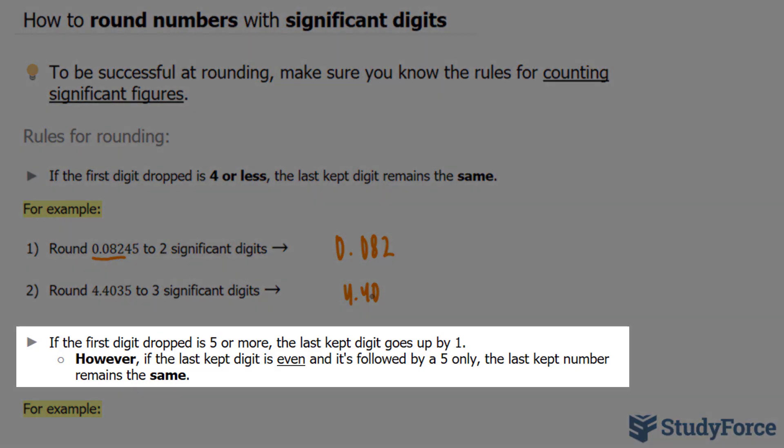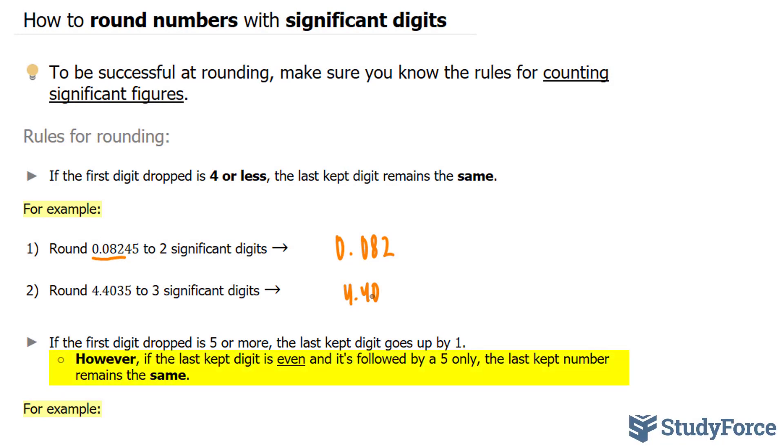The next rule says that if the first digit dropped is 5 or more, the last kept digit goes up by 1. Now that's something that we're all familiar with, except for this next part. However, if the last kept digit is even, and it's followed by a 5 and only a 5, the last kept number remains the same.